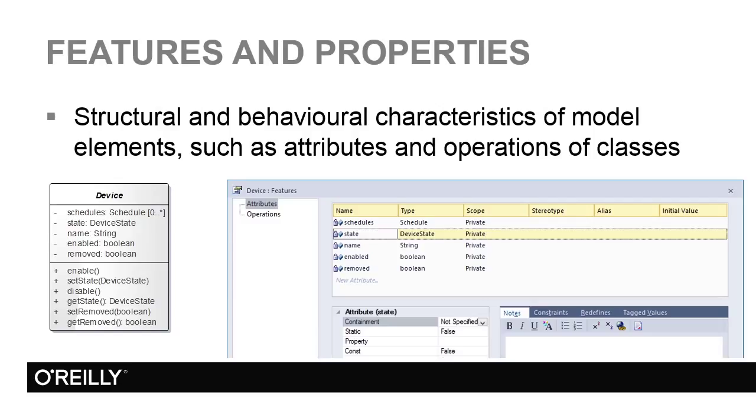Classifiers have features and properties. These may be structural or behavioural. The ones that we'll use the most are attributes and operations. In the case of attributes, these define the slots that will hold values for the attributes, member variables, data members, or whatever term is used for the attributes of classes in the programming language used to develop the system. Instances have actual values in the slots defined by features and properties, and those values define the run state for a particular instance.